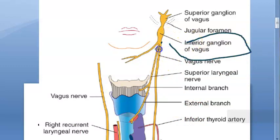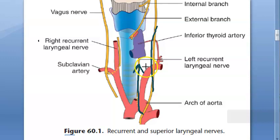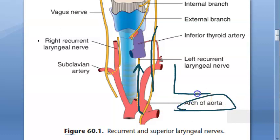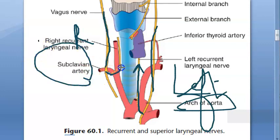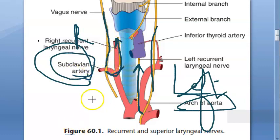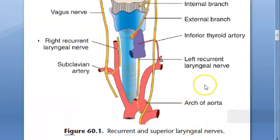From the inferior ganglion of vagus, two things come out: the superior laryngeal nerve and the vagus nerve. The vagus nerve goes further down, and from it a branch arises going back upwards — that is why it is called the recurrent laryngeal nerve. On the left side, it loops around the arch of aorta. On the right side, the vagus nerve gives out a branch which is the recurrent laryngeal nerve, going around the subclavian artery.